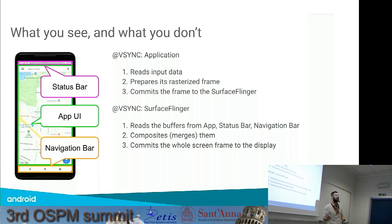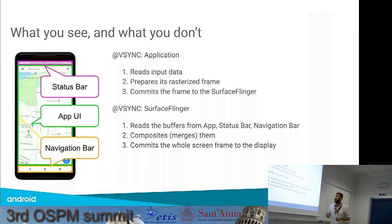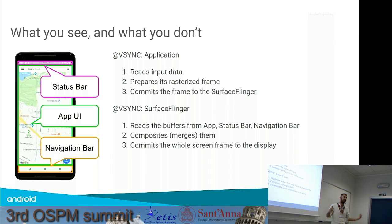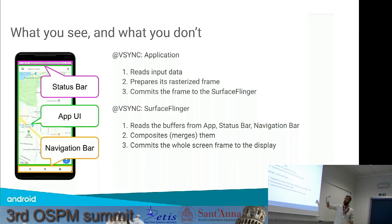VSync is a signal passed to the software from the screen, saying 'I'm ready to accept a new frame because the old one has been completely shown.' From every application's perspective, what an application does is: it reads the data it receives as input, then prepares a rasterized frame, and commits the frame to another module called Surface Flinger. This happens in a loop activated at every VSync.